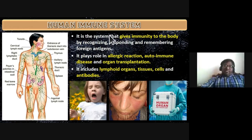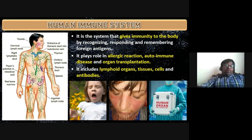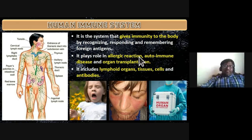The immune system is a system that gives immunity to the body by recognizing, responding to, and remembering foreign antigens. It identifies the antigen, produces antibodies against them, and memory cells remember the foreign antigens so that antibodies are produced immediately the next time the same antigen infects us.